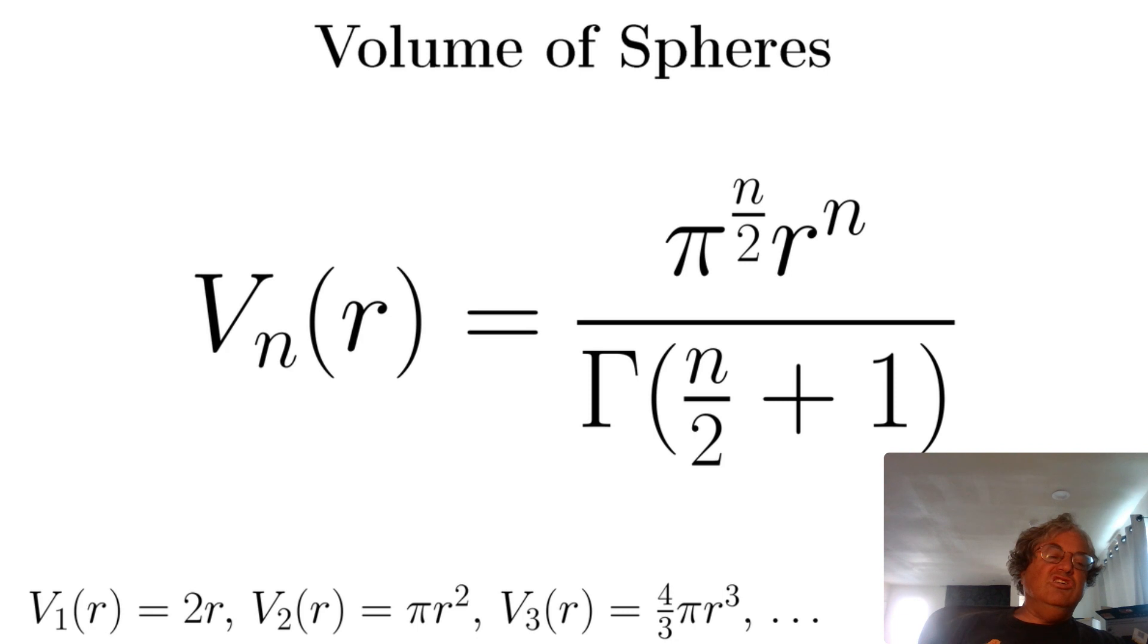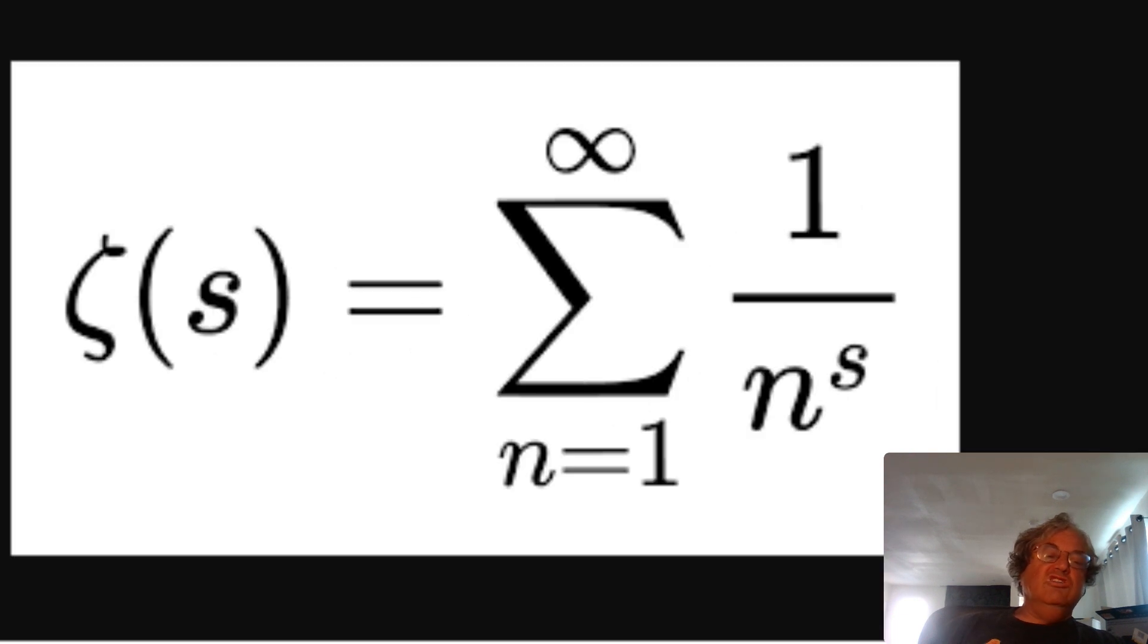And we don't have to stop there either. Bear with me for a second. This function is called the Riemann zeta function. This funny letter on the left is a Greek letter zeta. So zeta of s. S is just an arbitrary positive real number greater than 1. If s is any positive real number greater than 1, then zeta s is defined this way. So it's the infinite sum of 1 over n to the s power. And this sum you can show for all s greater than 1. This sum converges, which means that zeta s is well defined.